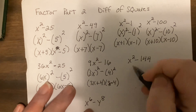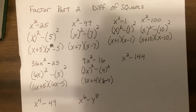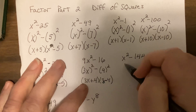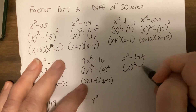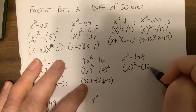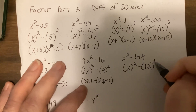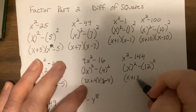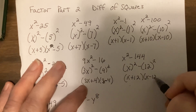Do this one on your own right now — go ahead, try it. What do you square? X. What do you square? Twelve. So: (x + 12)(x − 12).